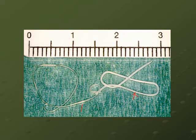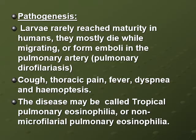The adult worms are present in the big blood vessels of the dog and they produce microfilariae which are present in circulation, similar to those of Wuchereria bancrofti. But in human beings it doesn't reach maturity. The larvae rarely reach maturity in humans; they mostly die while migrating and form emboli in the pulmonary artery, which we call pulmonary dirofilariasis.